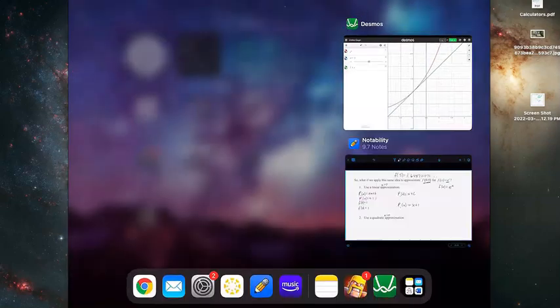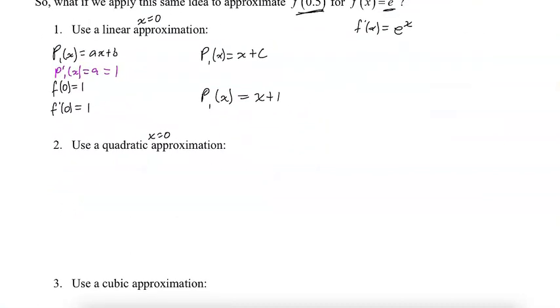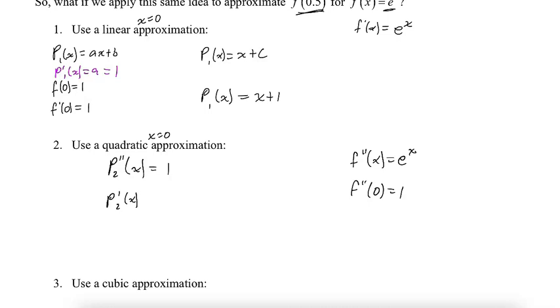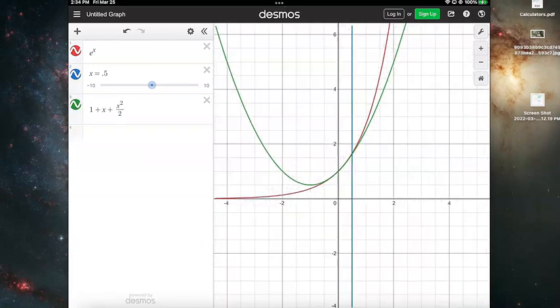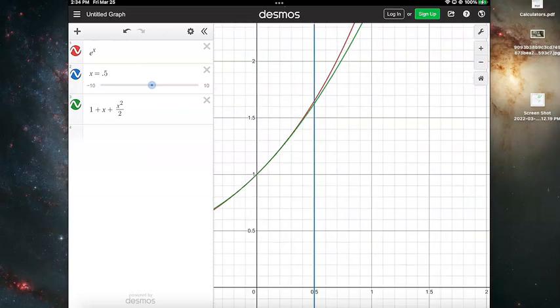For the quadratic approximation, I need the second derivative, which is still e^x, so f''(0) = 1. Starting from the second derivative of the approximation equaling 1, I work backwards: p₂''(x) = 1, so p₂'(x) = x + 1, and p₂(x) = x²/2 + x + 1. Adding x²/2 to Desmos — that's a pretty good approximation. At x = 0.5 I'm now only about 0.024 off.